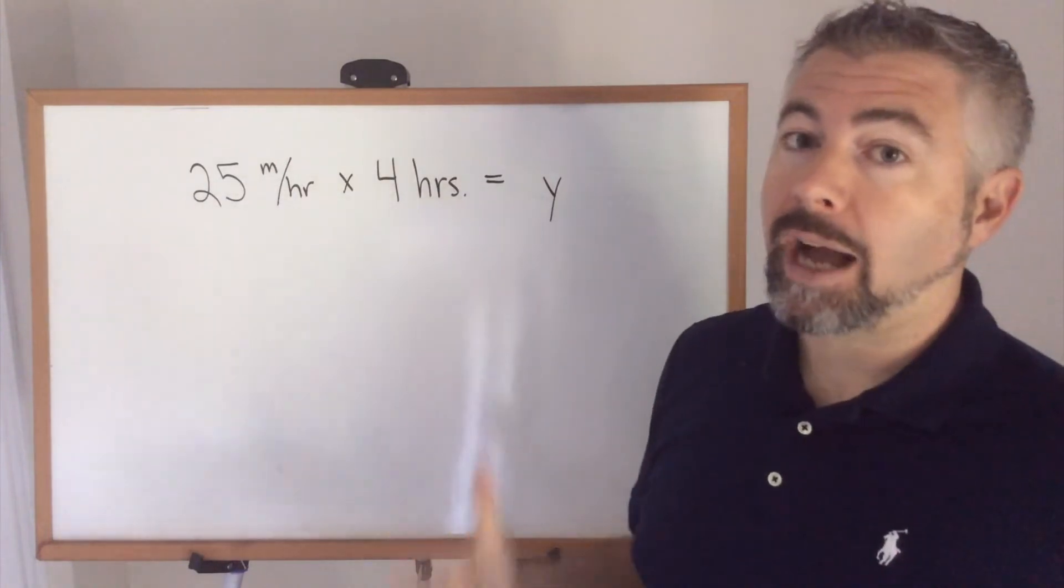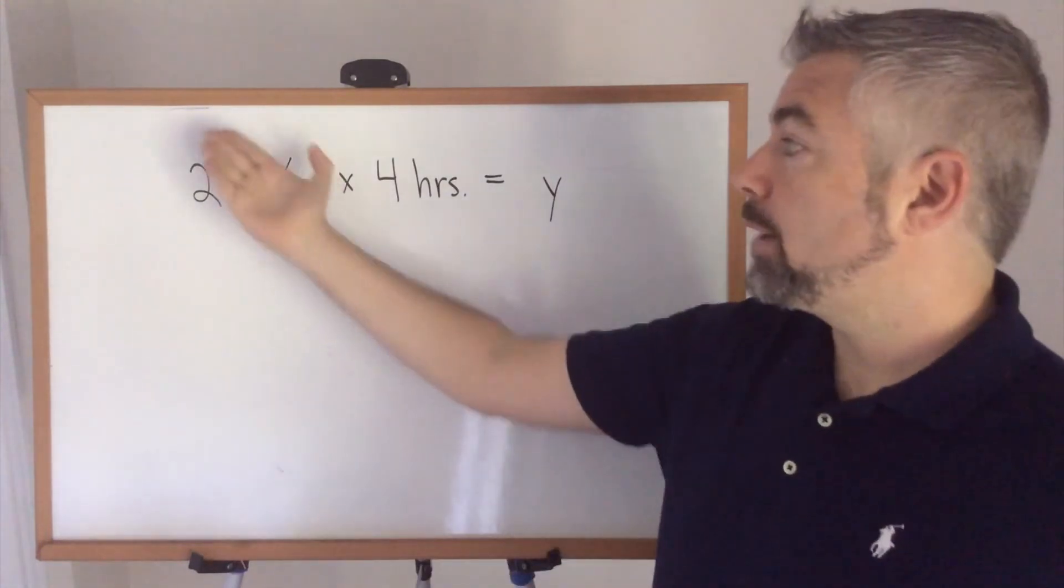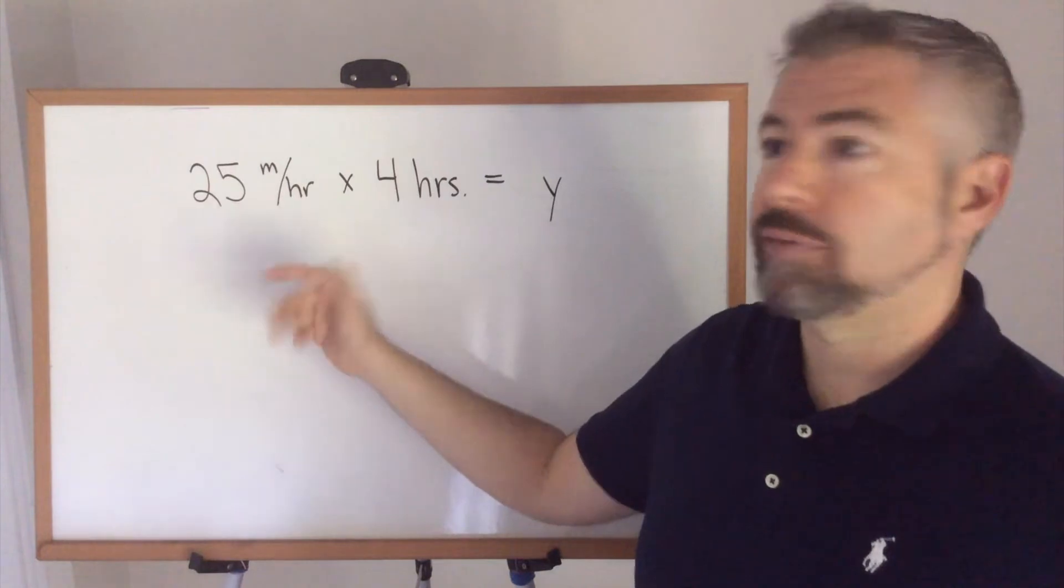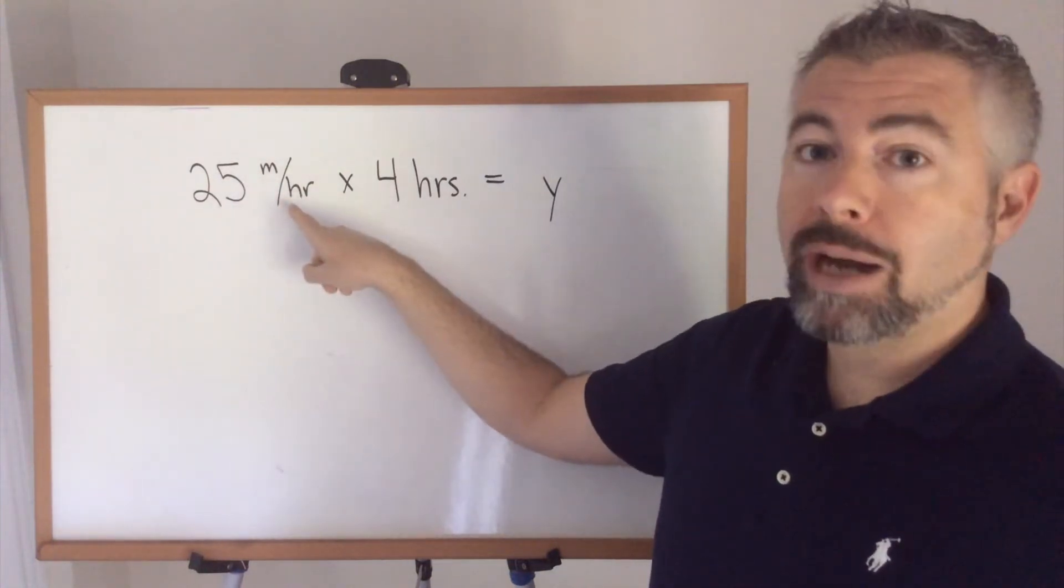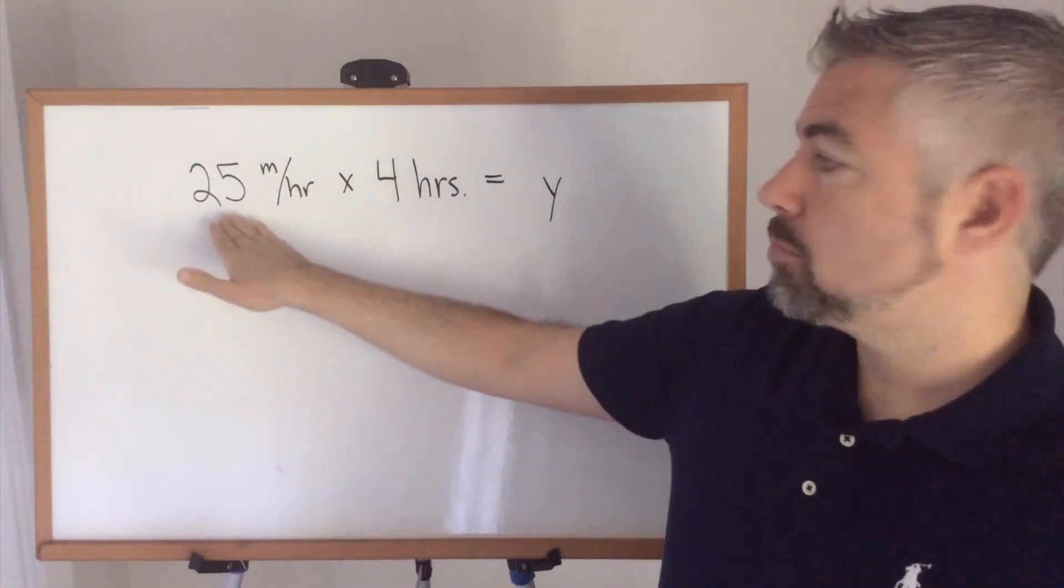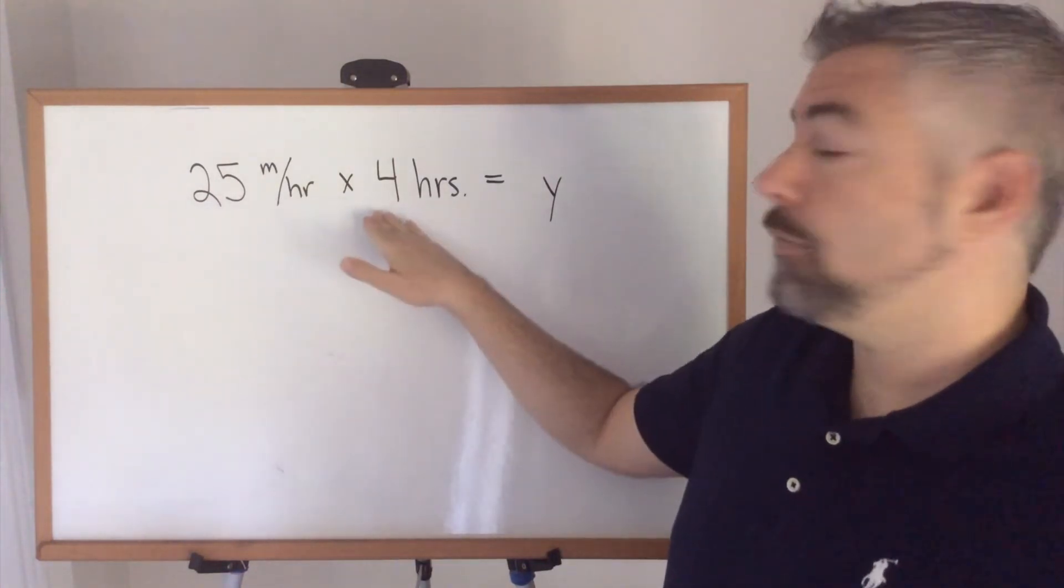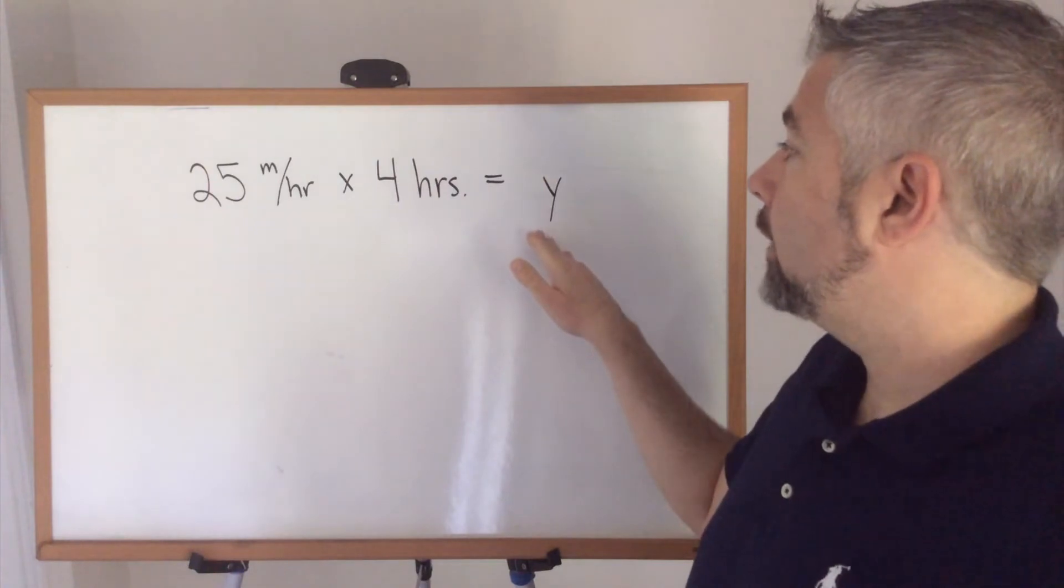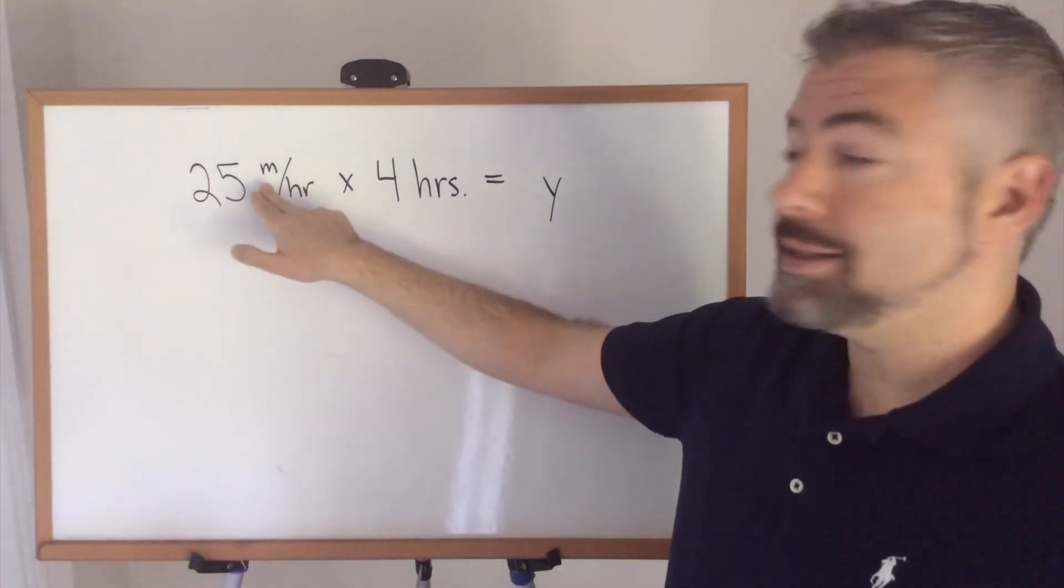In theory, I could have 25 halves miles per hour if I was calculating the number of miles I traveled in two hours, but that's pretty unusual. So what I have to do here is multiply 25 times 4 to get y, which will give me the total distance.